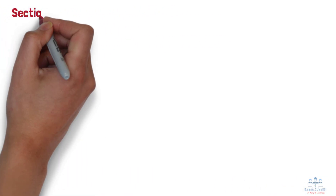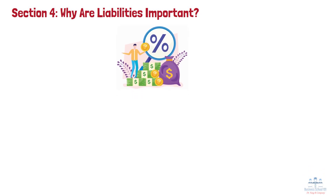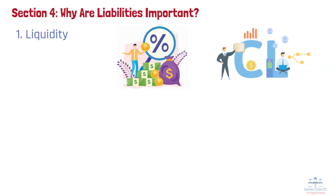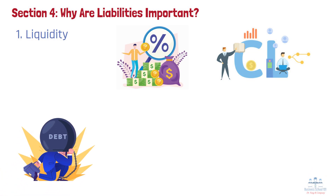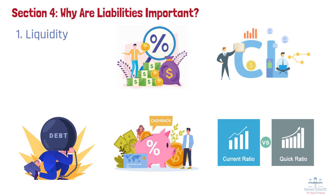Section 4: Why are liabilities important? Liabilities play a critical role in a company's financial management. First, liquidity: businesses must carefully manage current liabilities to ensure they can meet short-term financial obligations. Companies with too many short-term debts and not enough liquid assets may struggle to pay bills and employees. For example, a retail business must ensure it has enough cash flow to pay its suppliers, rent, and payroll obligations. Investors and creditors examine a company's current ratio and quick ratio to evaluate liquidity risk.